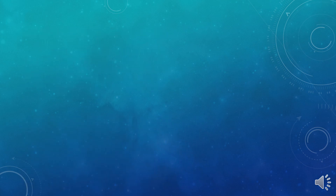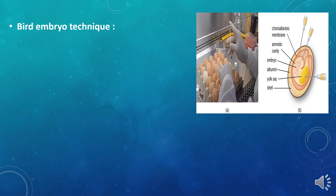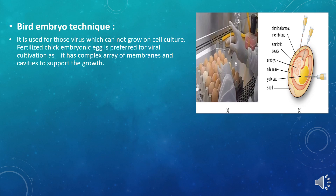The final technique is the bird embryo technique, which is used for the cultivation of viruses that cannot grow on cell culture. A fertilized chick egg is preferred for viral cultivation because it has many membranous cavities that support viral growth.